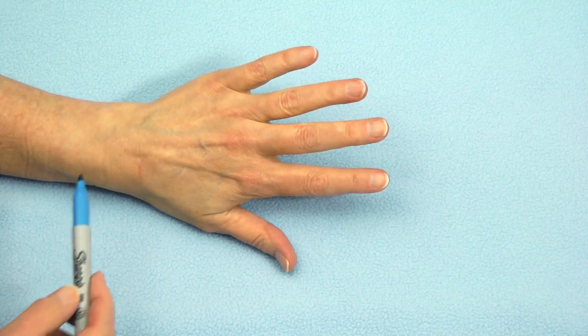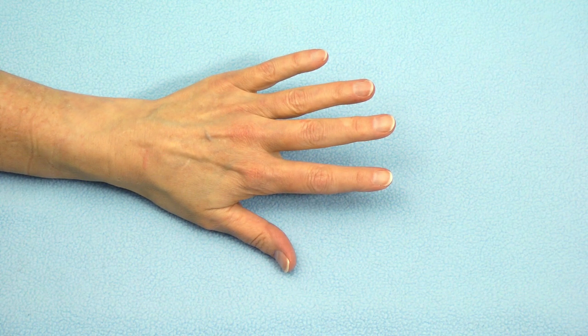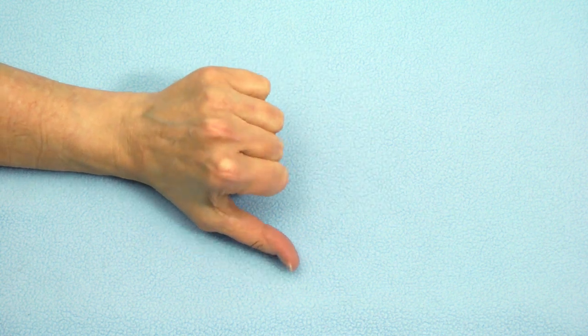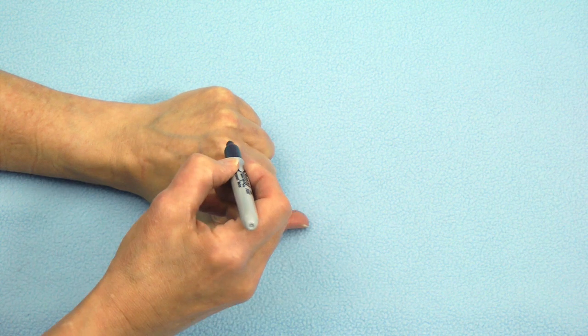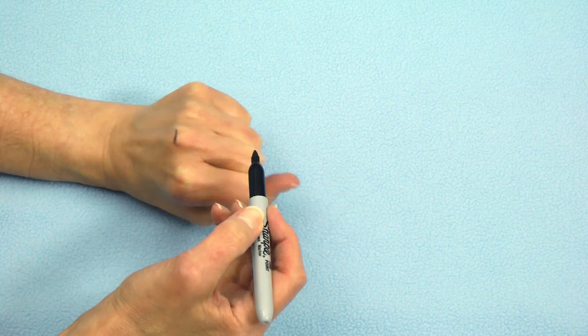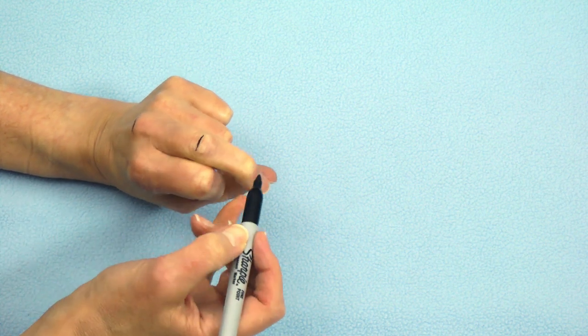We're going to draw the dorsal apparatus on my left long finger, but to do so, let's first identify where the joints are. If you'll flex your finger fully and draw a straight line across the apex of each joint, you will mark the axis of that joint.